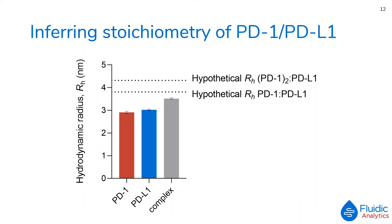Here we can see the measured hydrodynamic radii of the free PD-1 and PD-L1 in red and blue respectively. Using those values, we can calculate hypothetical hydrodynamic radii for complexes of different stoichiometries. The sizing obtained indicates that the complex formed a one-to-one binding stoichiometry rather than one of higher order.